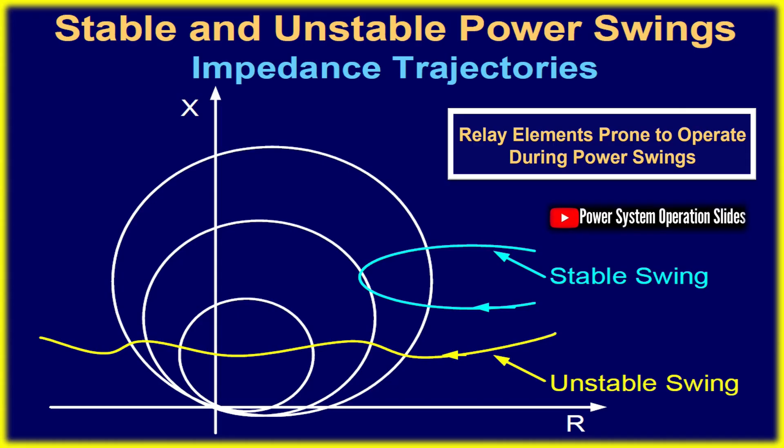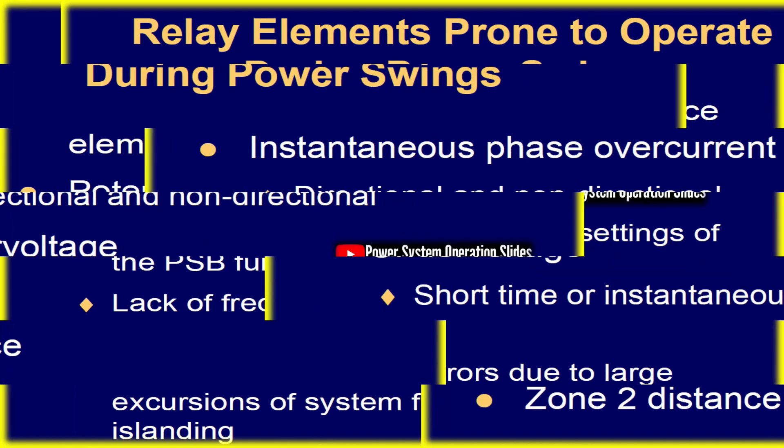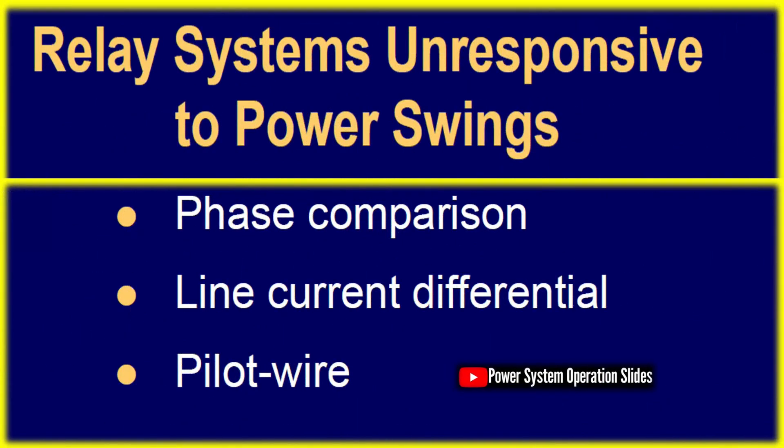Power system stability refers to the ability to return to a stable operating condition following disturbances such as faults, load changes, or generator disconnections. Power system integrity is upheld if only faulty components are isolated while the remainder continues functioning. When generators or zones lose synchronism, immediate separation is essential to prevent widespread outages and equipment damage.